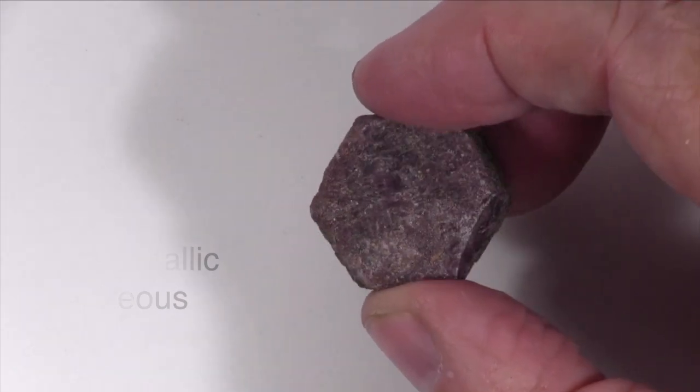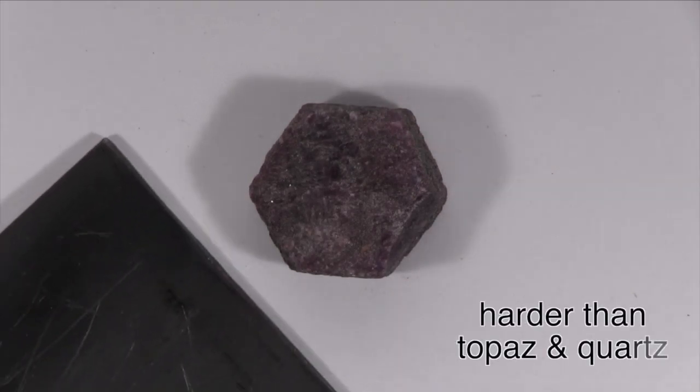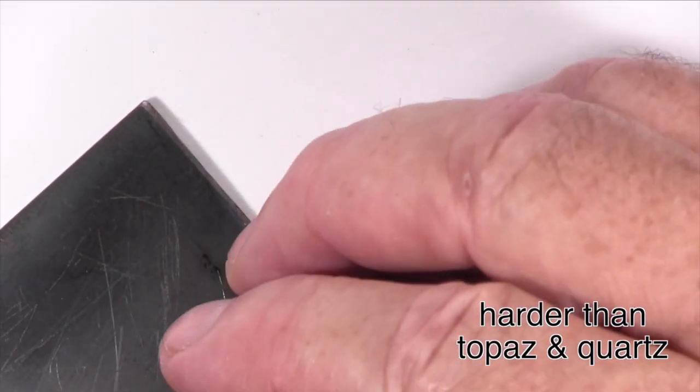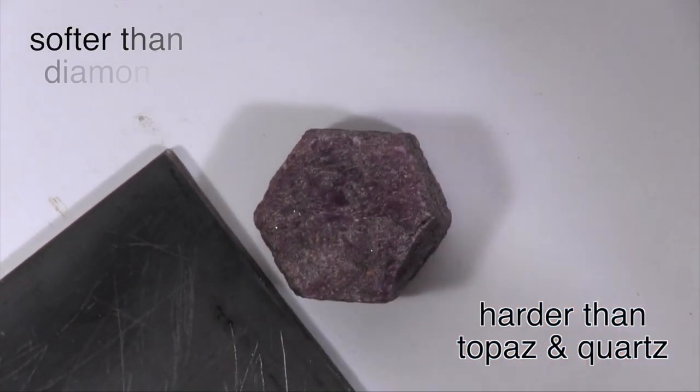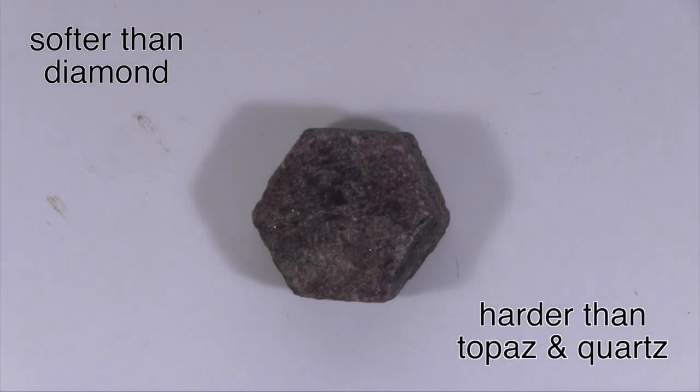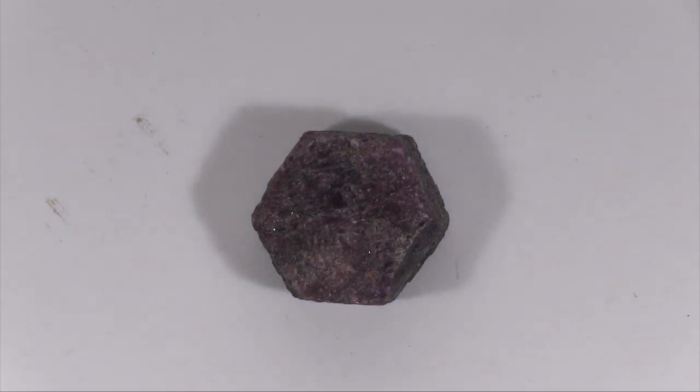This specimen is harder than glass. It scratches and so is harder than steel and streak plates and the minerals quartz and topaz. It is scratched by and so is softer than the mineral diamond. Indeed, diamond is the only mineral that is harder than this specimen.